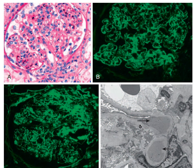Looking at the pathology images: the proliferative pattern with more exudation is visible on light microscopy. On immunofluorescence, IgA and C3 are both present in the mesangium and capillary walls. C3 is similarly present in the mesangium and capillary walls. Electron microscopy demonstrates sub-epithelial humps and the mesangial deposits.